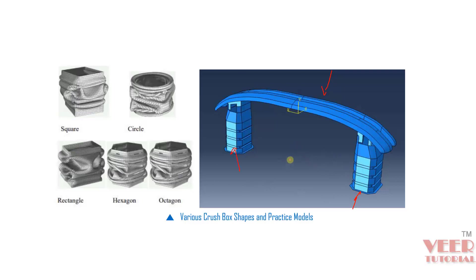Let's see the meaning of crumpling. Here you can see a front view of the bumper and the crash box. Whenever any impact takes place — say the vehicle is impacted with a rigid wall from the front side — ideally the crash box should crumple like this. Crumpling means it is folding by itself. Crash boxes come in various shapes and sizes: square, circle, and rectangular are popular, and nowadays hexagon and octagon profiles are more common.